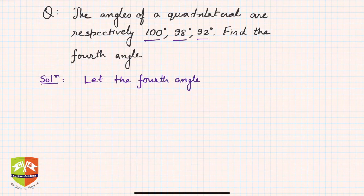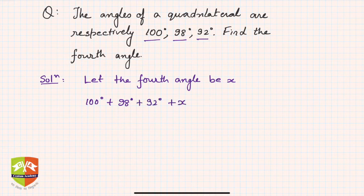Then what we can say is the four angles added together: 100 degrees plus 98 degrees plus 92 degrees plus x is equal to 360 degrees.